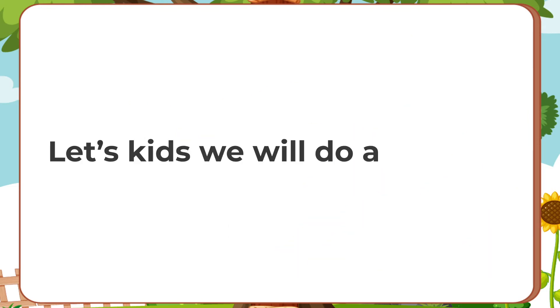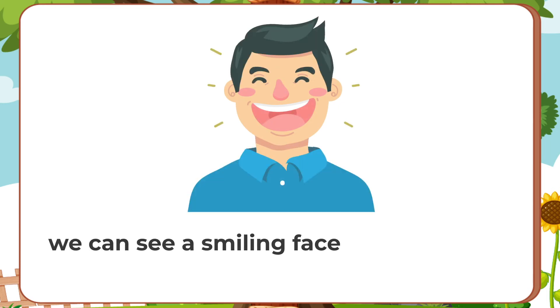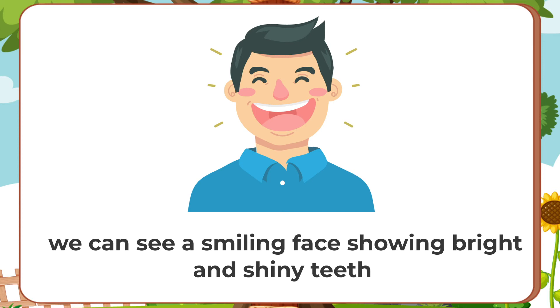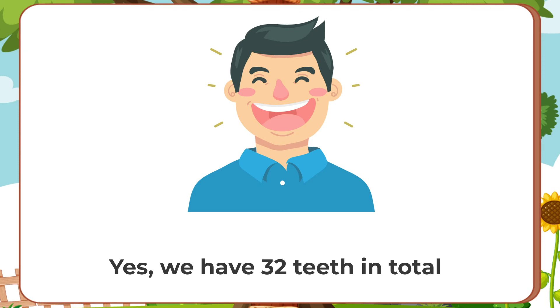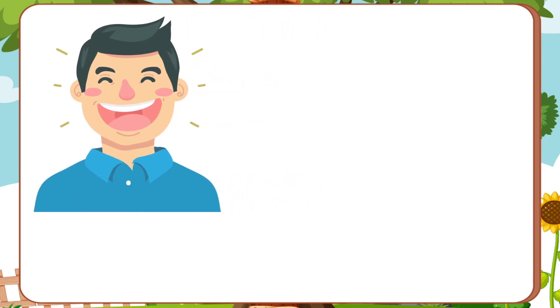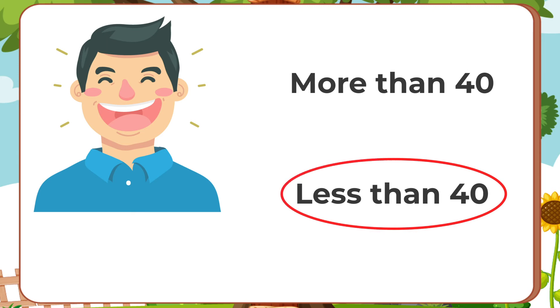Now kids, we will do an activity. Here, I will show you some pictures and you have to find out the correct answer. Let's see the first picture. Here we can see a smiling face showing bright and shiny teeth, right? Do you know how many teeth do we have? Yes, we have 32 teeth in total. Now, you have to tell me, is this man having more than 40 teeth or less than 40 teeth? Yes, the answer is less than 40 teeth.